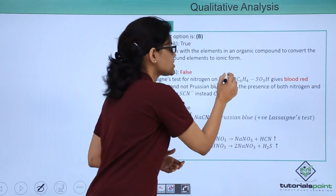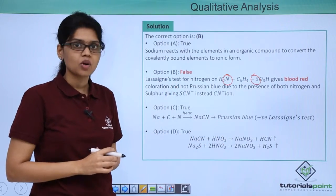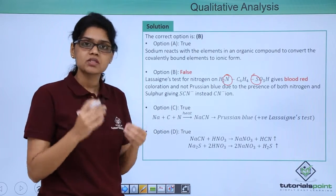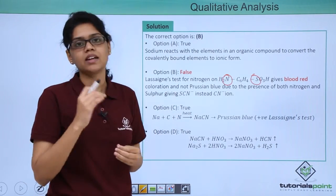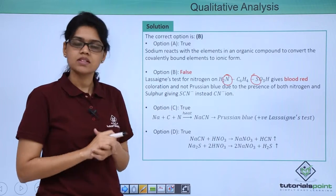Because we know that when a compound has both nitrogen and sulphur, a blood red coloured complex is formed due to the formation of sodium thiocyanide, and not Prussian blue coloured complex which results from the sodium cyanide of sodium fusion extract. Hence we know that this particular statement is false.